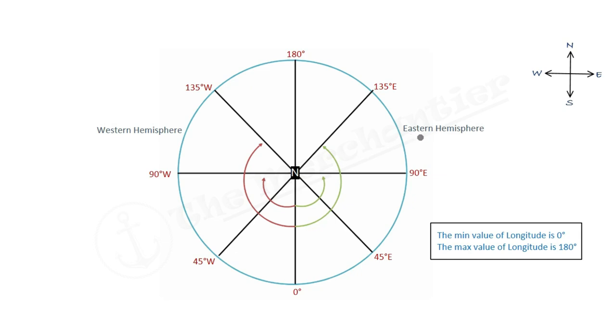So Eastern Hemisphere, whichever degree line lies, will be counted in east, and for Western it will be counted in west. For example, if this line is 45 degrees, this will be 45 degree east meridian.